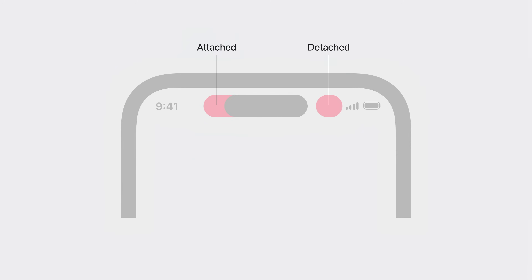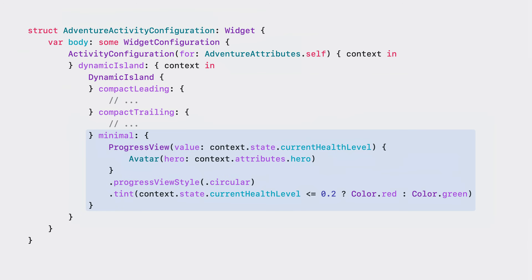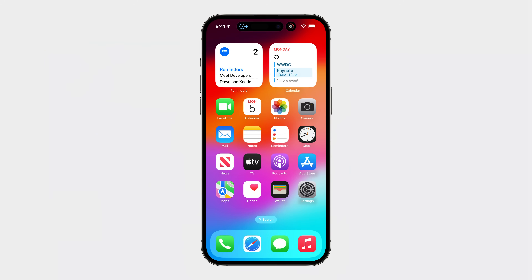When more than one app starts a live activity, the system chooses which live activities are visible and displays both of them using the minimal presentation for each. One minimal presentation appears attached to the dynamic island, while the other appears detached. Your minimal view should only have the most critical information, as you have very limited space to work with. For the minimal view in my live activity, the most important information to show is who the hero is and the hero's health. So I'll show the avatar and the health level with a dynamic tint color. This way, users will know when to help out their hero by looking at the minimal view.